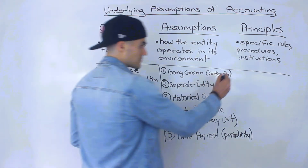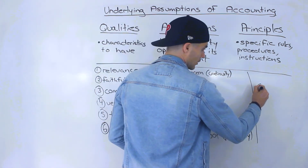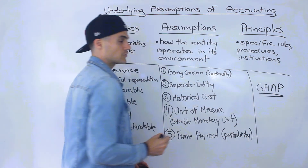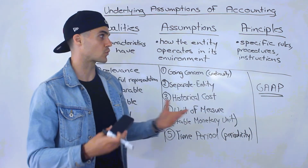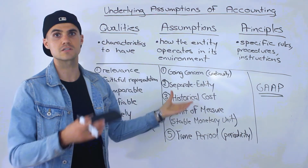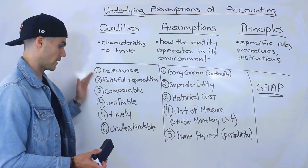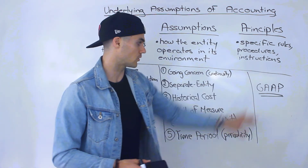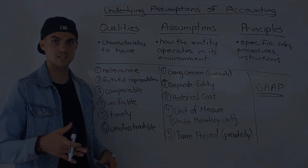And then principles for accounting — already mentioned — they're called the Generally Accepted Accounting Principles, or GAAP. That's what the rest of the course is going to be based on: the specific rules, procedures, and instructions for how to create financial statements from financial data in a way where these qualities are maximized. But what I'm going to focus on in this section is going over each of these five assumptions separately.